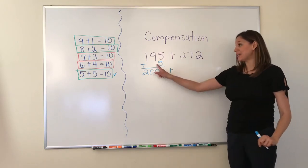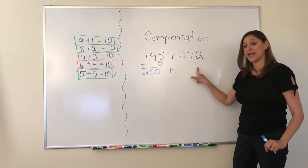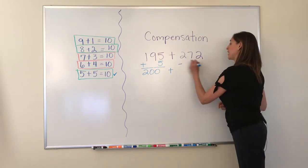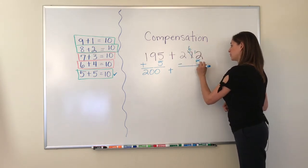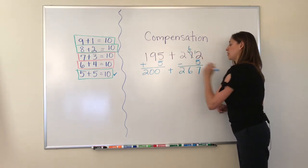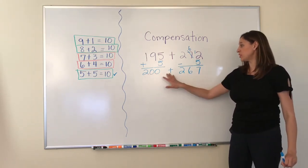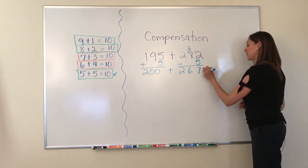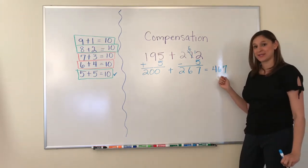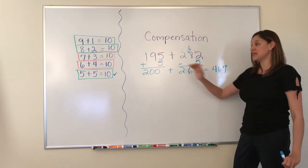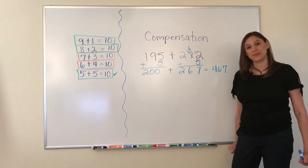If I added 5 here, I am going to take away 5 to the other addend, so I am going to minus 5. My number is 267, so I have 200 plus 267 that equals 467. And that is my answer because I added it here and I subtracted it here. This is how you compensate.